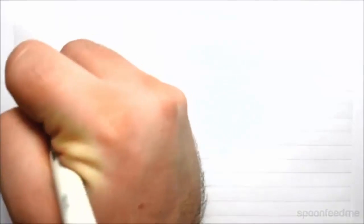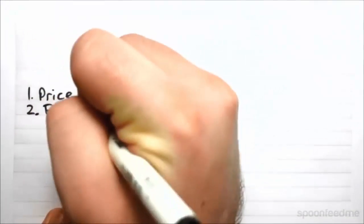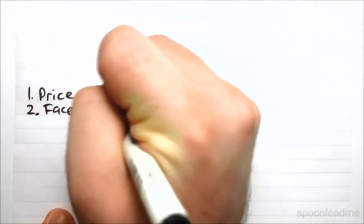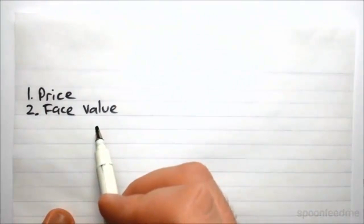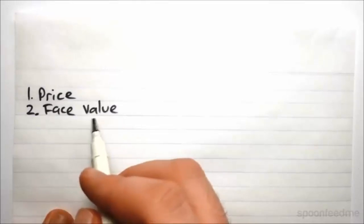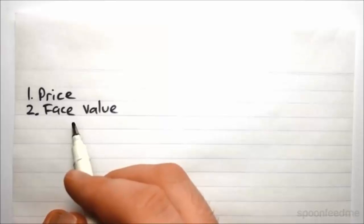Then there is what we call the face value. Now this amount is what you are going to be paid on maturity of the bond at the very end after 10 to 30 years. This is the amount you will get as a lump sum.